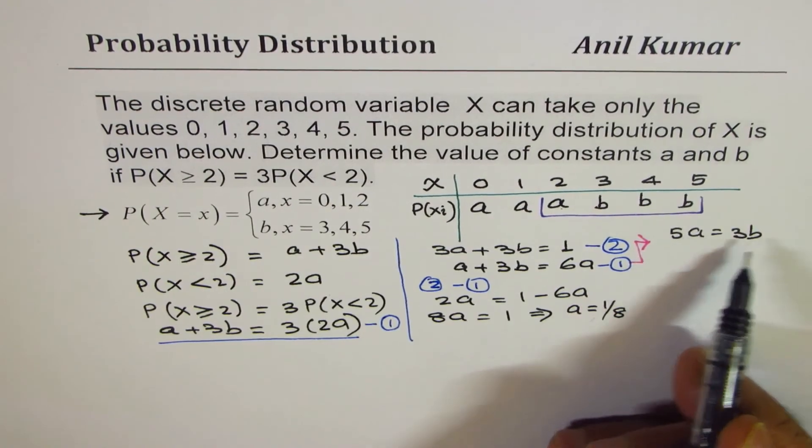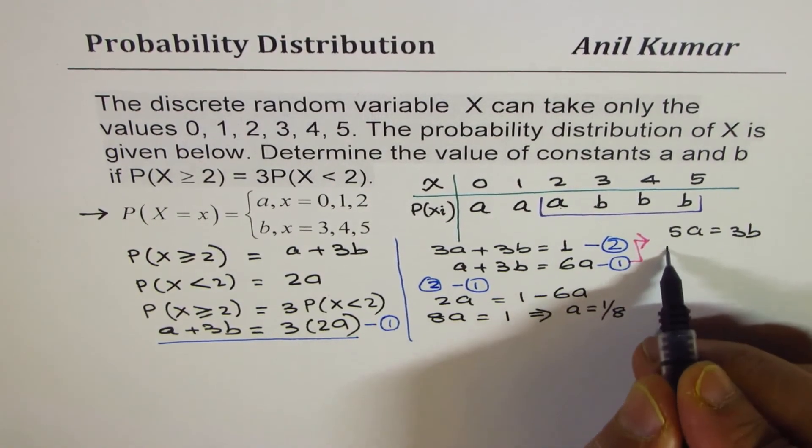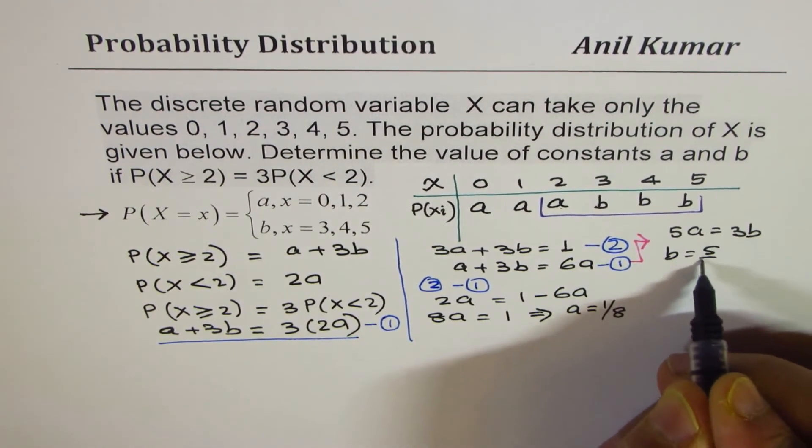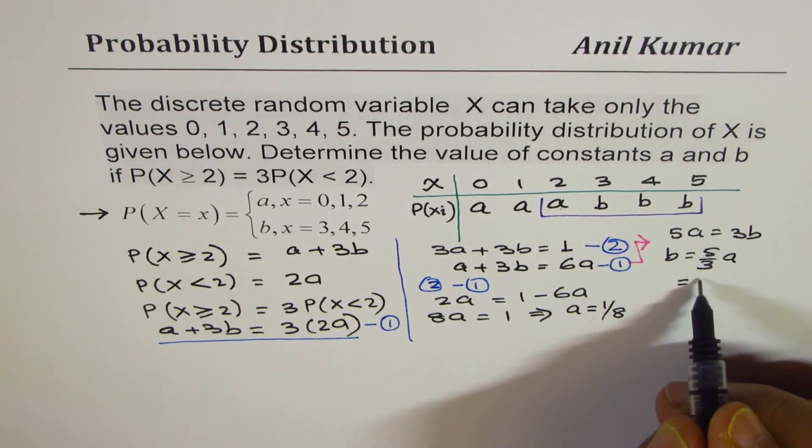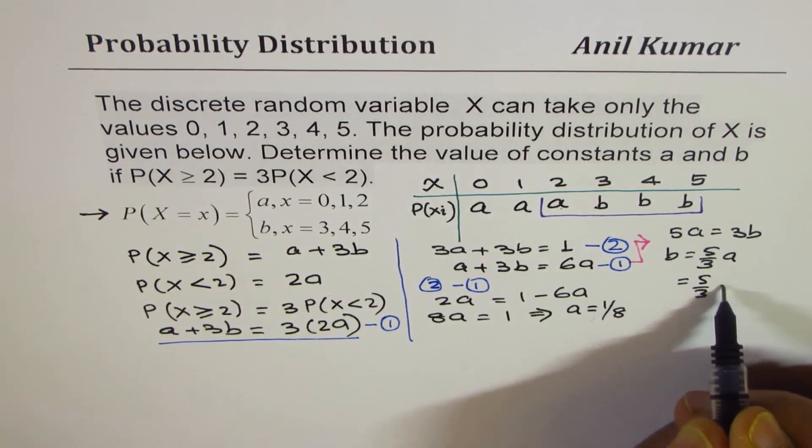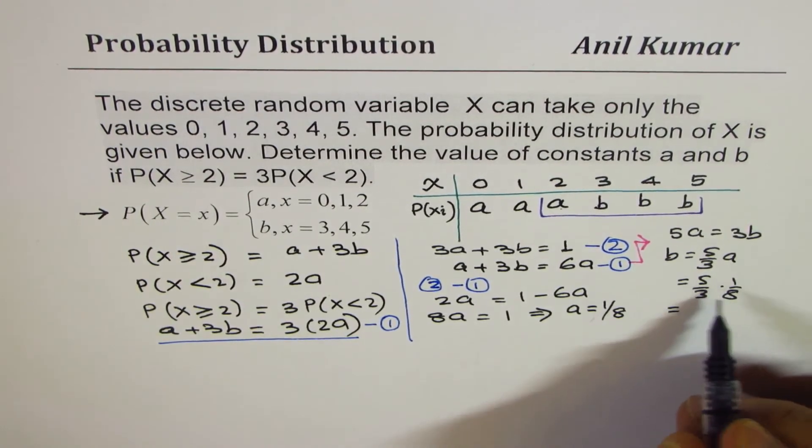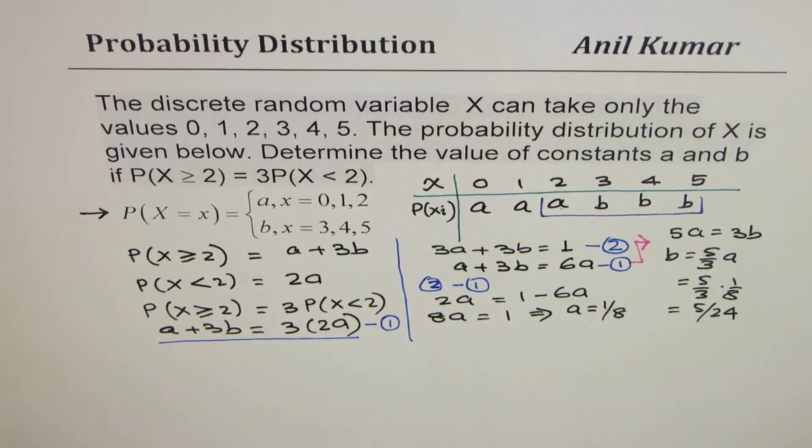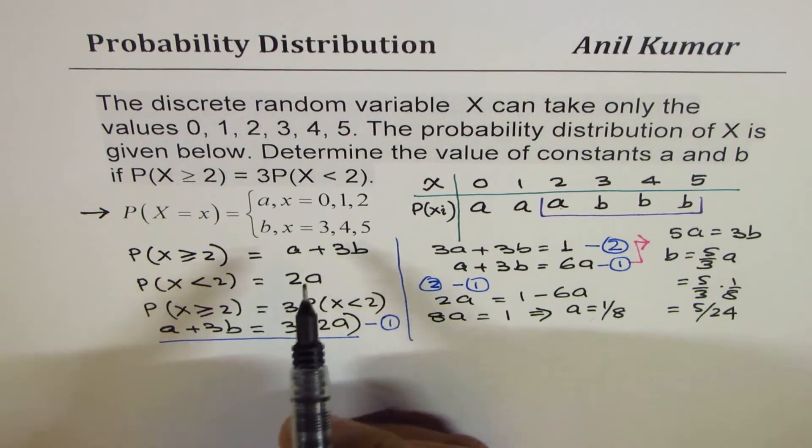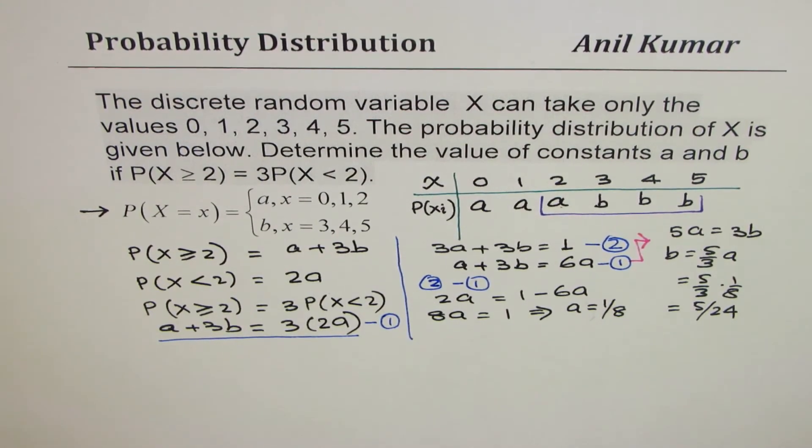So we know a, we can find what b is. So b is 5 over 3 times a. So that means 5 over 3 times 1 over 8, and that is 5 over 24. So 5 over 24 is the value of b.